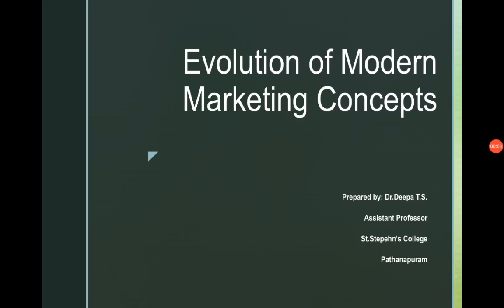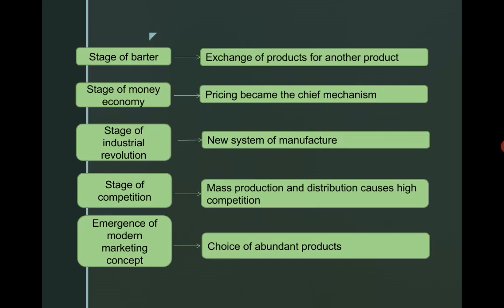Now we will see the topic Evolution of Modern Marketing Concept. We are going to discuss the first stage of marketing concept. The first stage is the barter stage, that is the exchange of one product for another product.